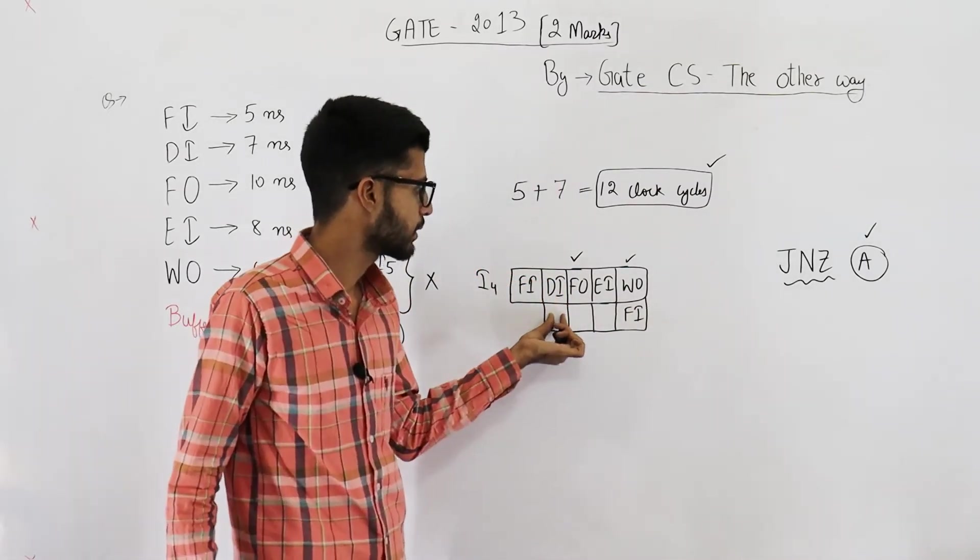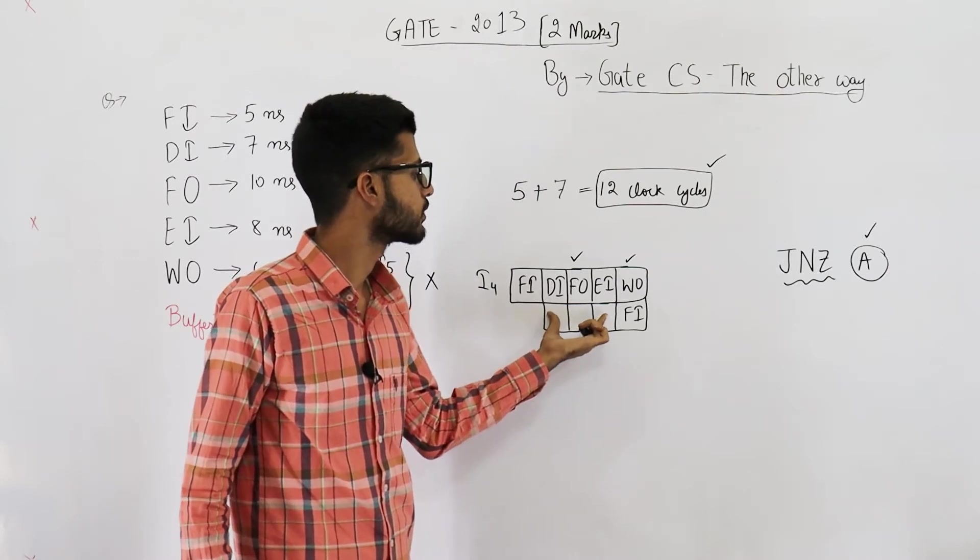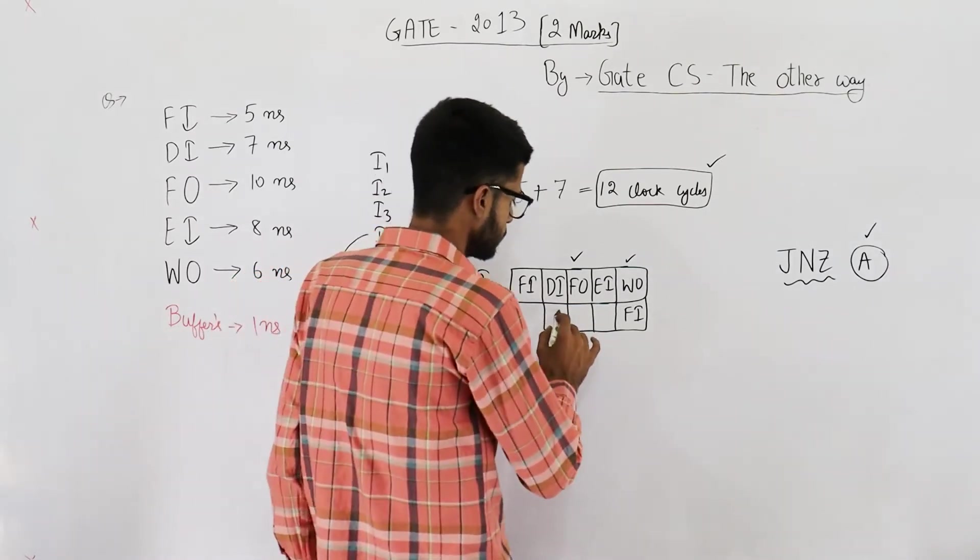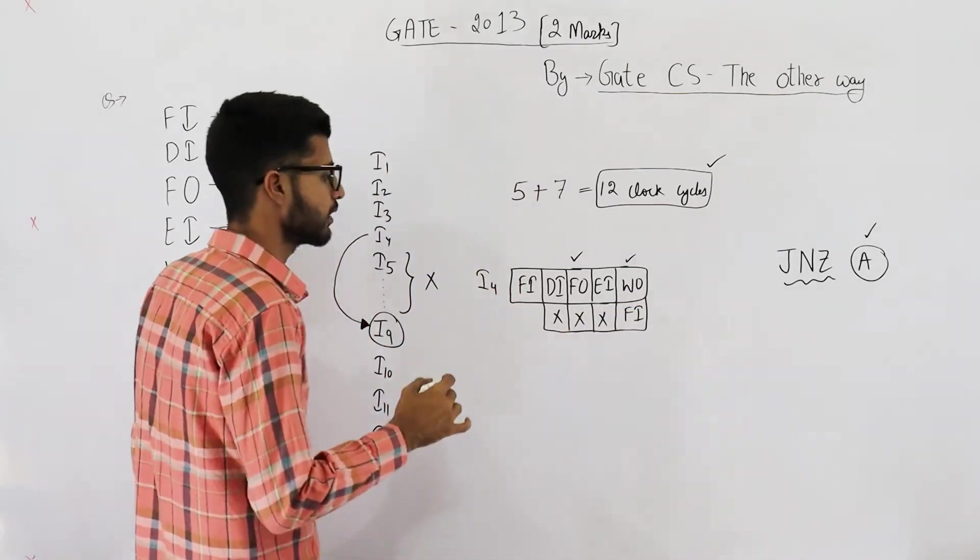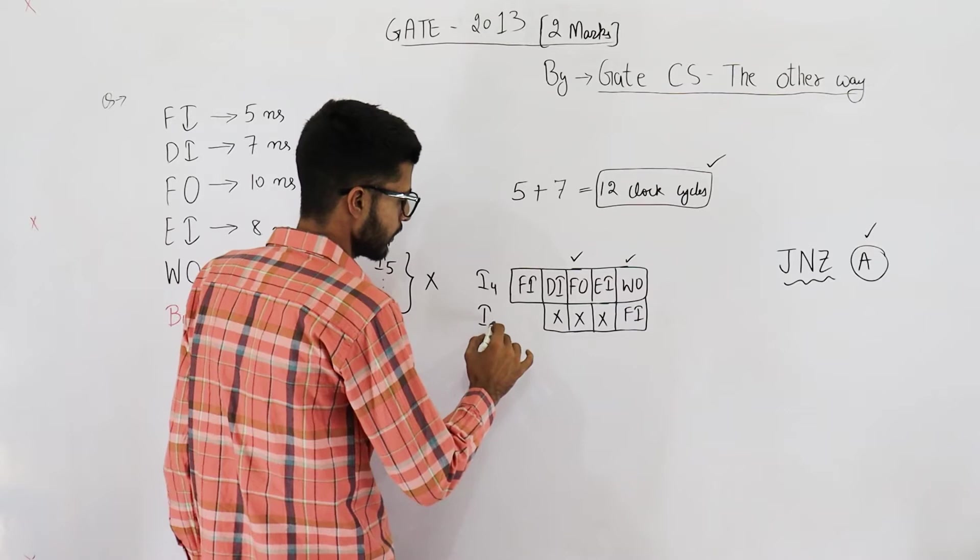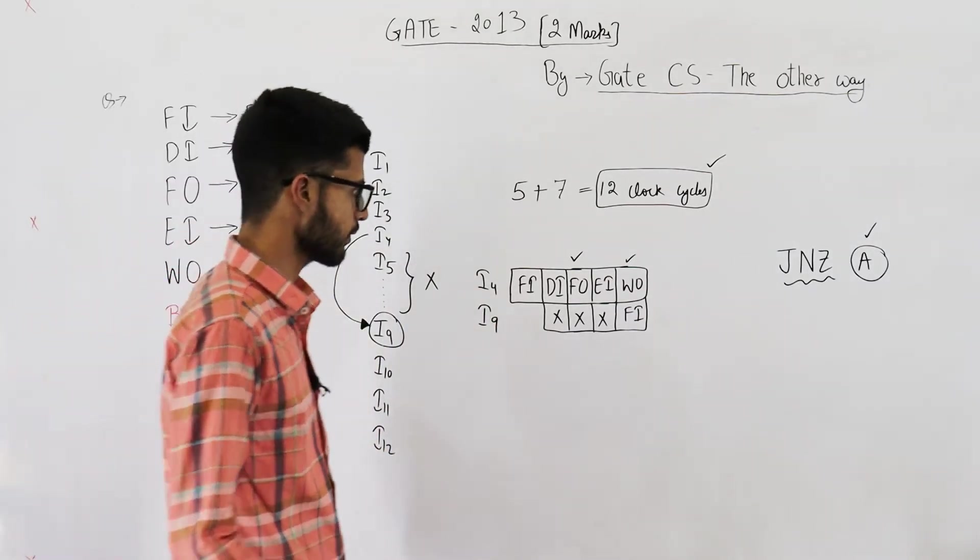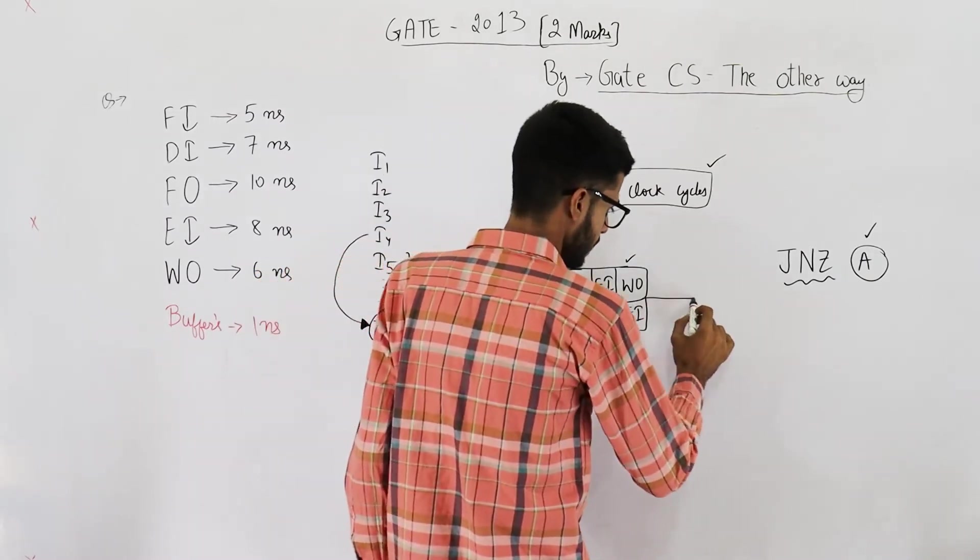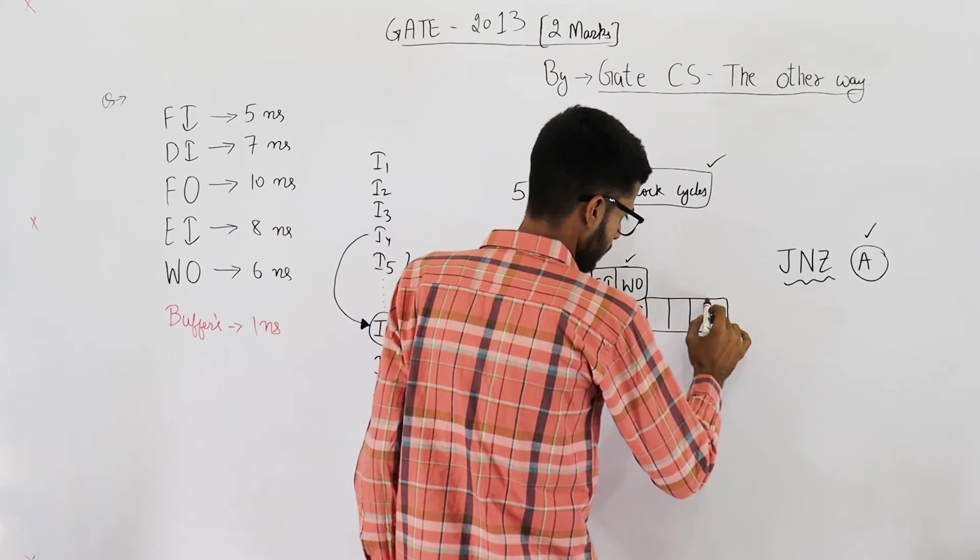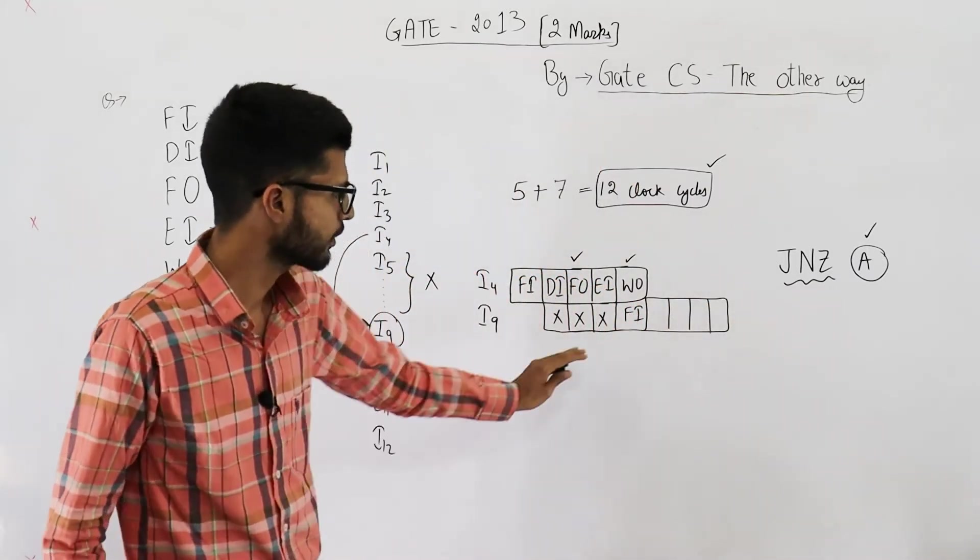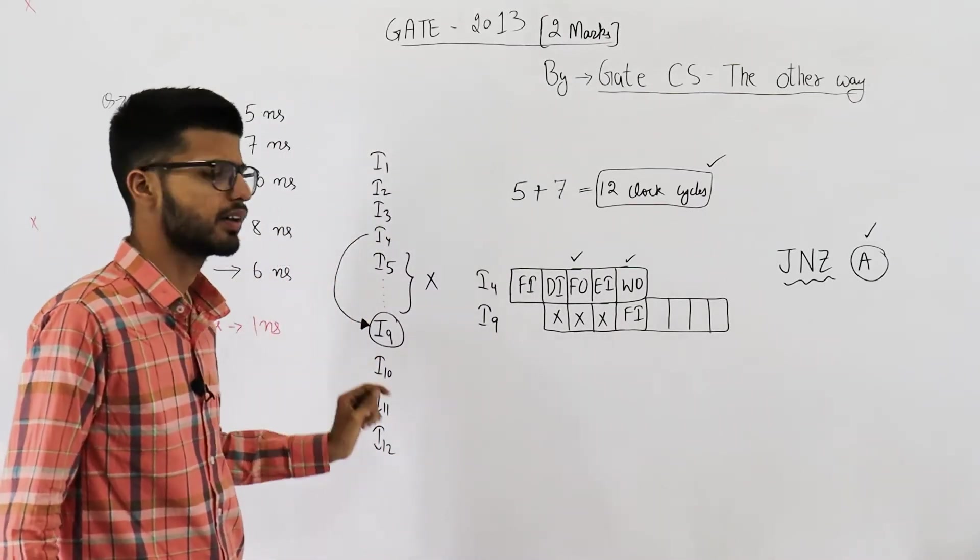Normally the fetch would have happened here. But now you have introduced these three stall cycles. And because it's given in the question that the branch is taken, so after i4 we execute i9. And similarly its remaining four stages will be executed. Then you can just resume the program normally. i10, i11 and i12.